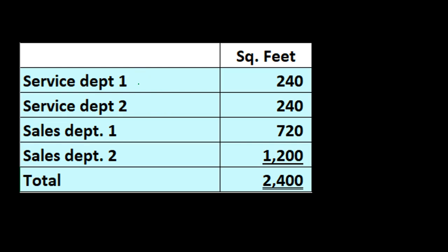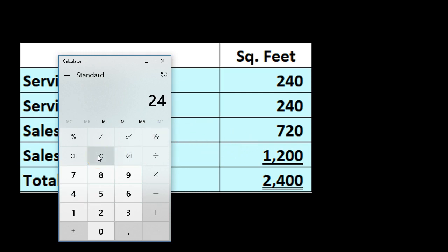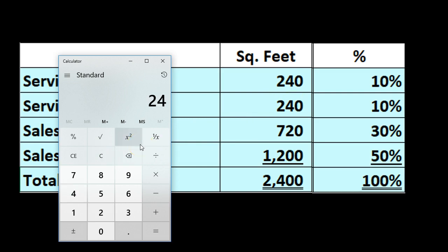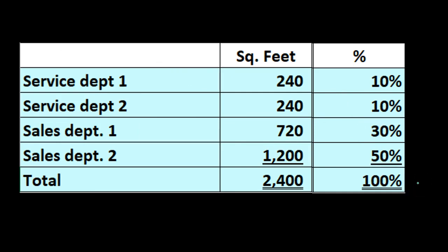Service department one is 240 square feet, service department two is 240, sales department one is 720, and sales department two is 1,200. We look at percentages: 240 divided by the total of 2,400 gives us 10 percent, 240 again is 10 percent, 720 divided by 2,400 is 30 percent, and so on. All departments must add up to 100 percent. We take each department's square footage in relation to the total and get the percentages we use to allocate rent and utilities.